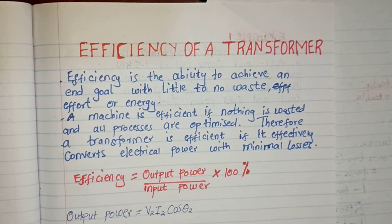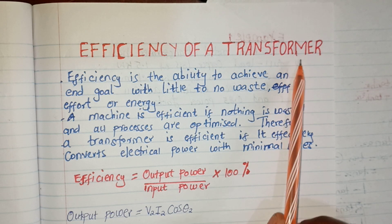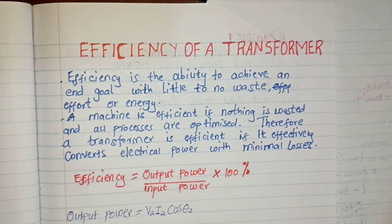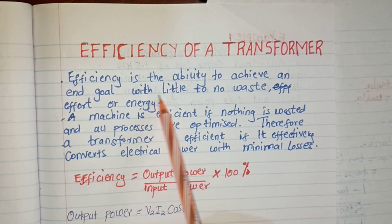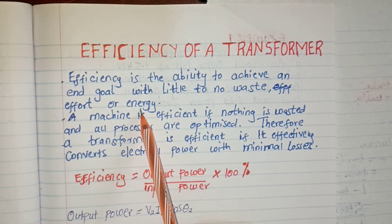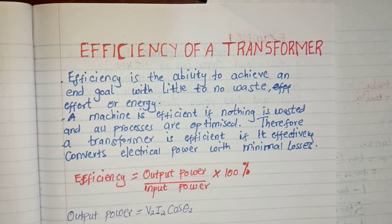Hello and welcome once again to my channel. In today's lesson we're going to look at the efficiency of a transformer. The first thing we have to know is what efficiency is. Efficiency is the ability to achieve a goal with little to no waste of effort or energy, which means for a transformer to be very efficient it must use very little power and have little losses — copper losses and iron losses — occurring when power is input to the transformer.